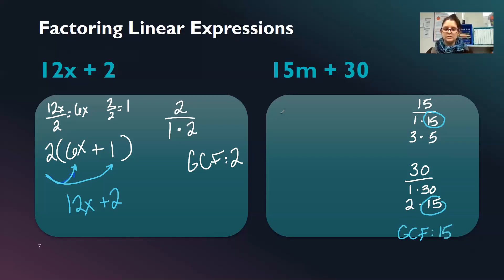So 15 is going to go outside of my parentheses. So I have 15m divided by 15. That leaves us with 1m. Or we can just write m. 30 divided by 15. If you're not positive, look back at your list of factors. You've already written that down. It's 2. So m plus 2. And we could double check by distributing and get what we started with.